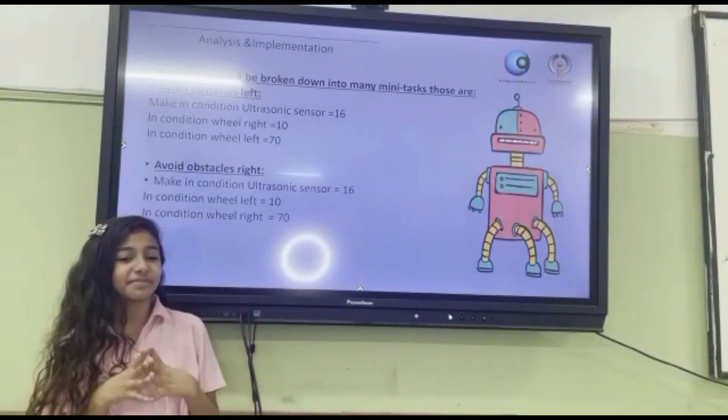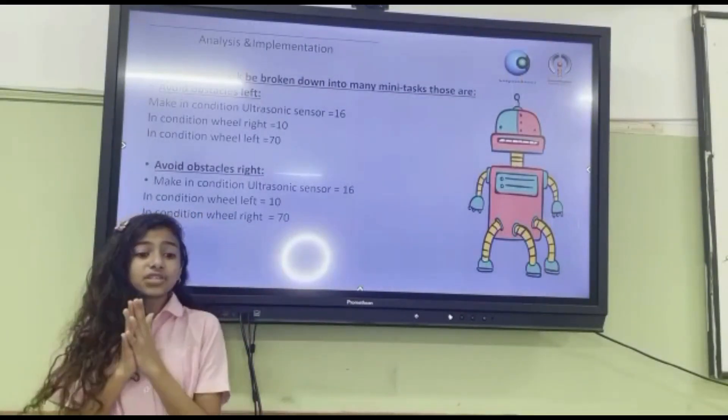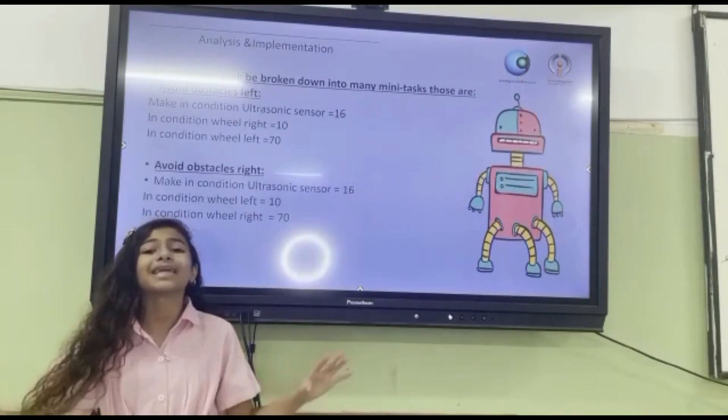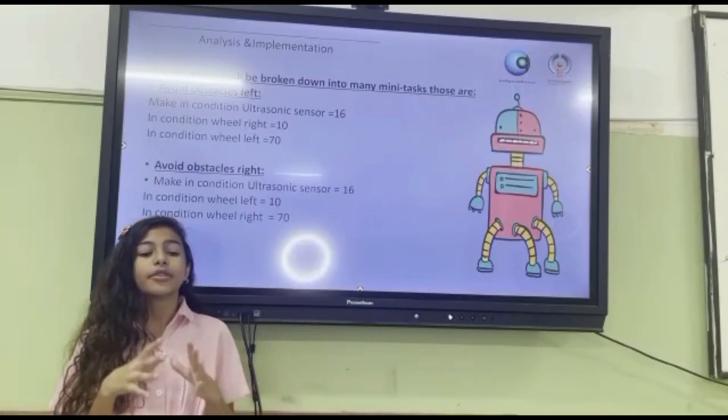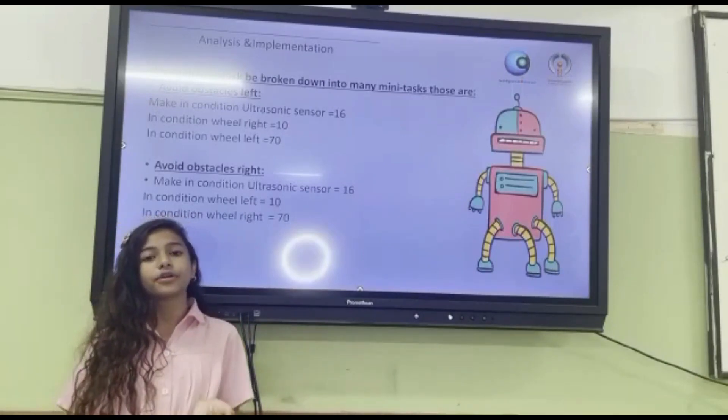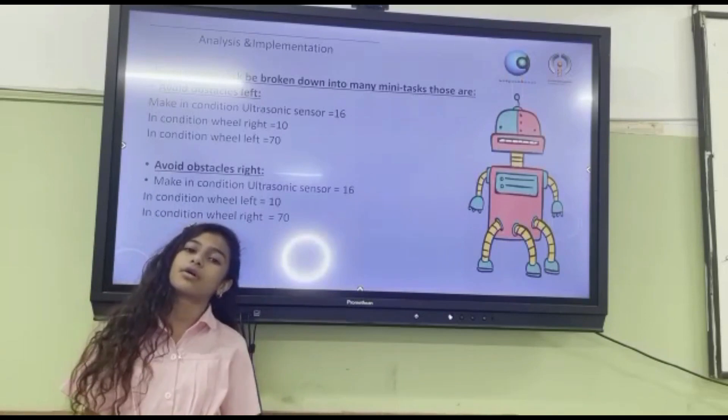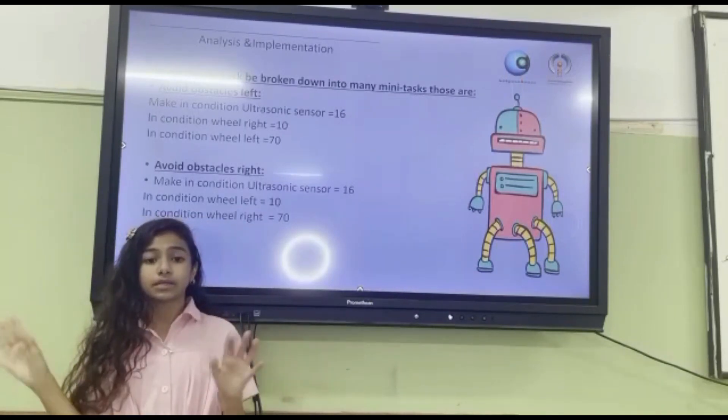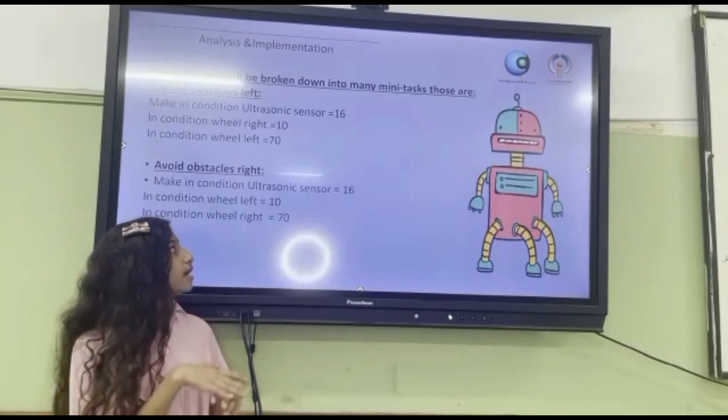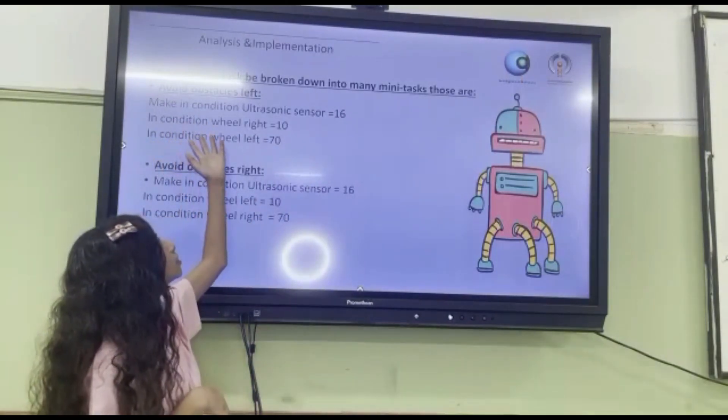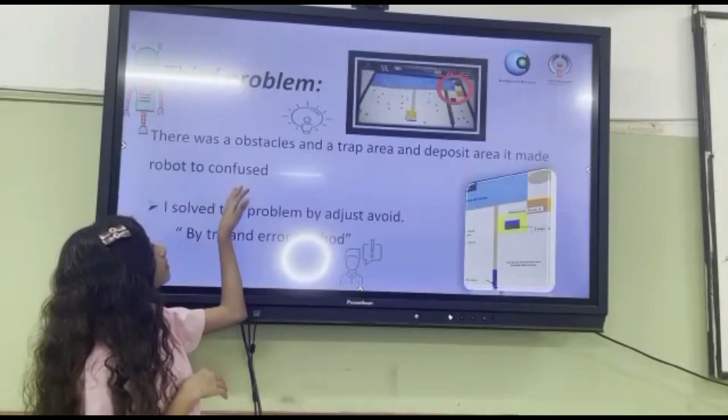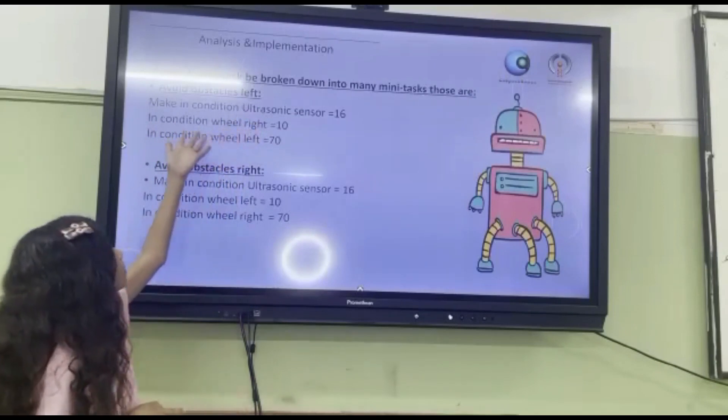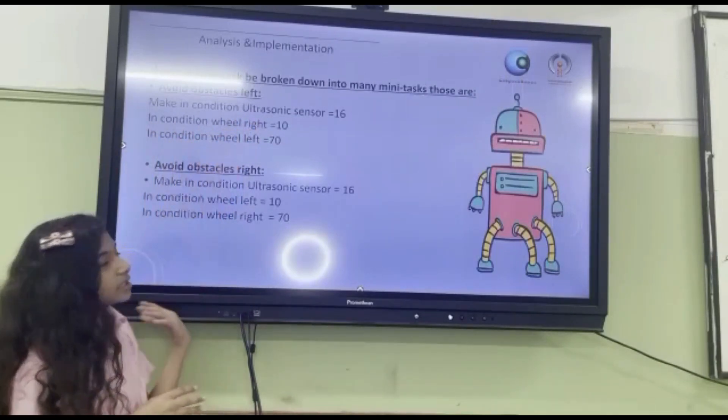Analyze and implementation. The challenge can be broken down into many mini tasks: avoid obstacles left and avoid obstacles right. Avoid obstacles left: make in condition ultrasonic sensor equals 16, make in condition wheel right equals 100, in condition wheel left equals 70.